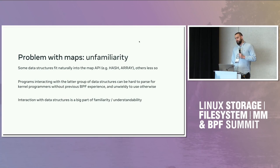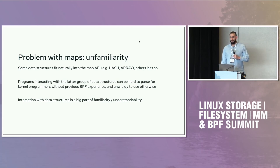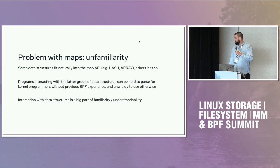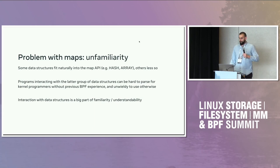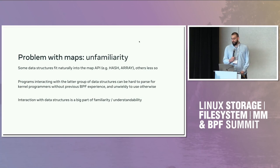One of the things he didn't like was BPF maps. There are problems with the BPF map abstraction that I classify into two groups. One is unfamiliarity — everyone's used basic hash map and array map, and those fit really well into the map API. Others, less so. For example, how do you remove something from the bloom filter map? There is a BPF map remove helper, but it basically doesn't do anything for the bloom filter. Programs that interact with data structures where the abstraction doesn't fit well can be hard to parse for kernel experts who aren't BPF experts, and even if they understand, they're generally unwieldy to use.